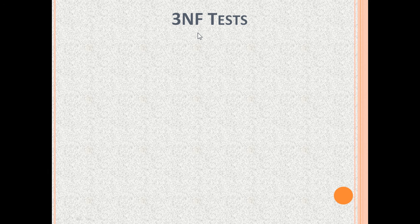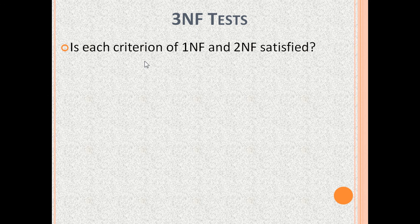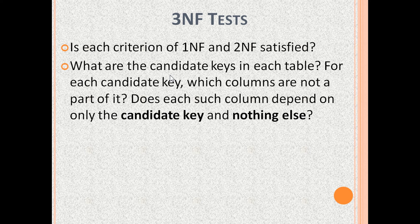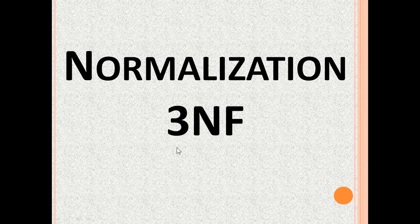We have seen database normalization explained with examples of how to test if a table is in 3NF or not. We need to check: Is each criterion of 1NF and 2NF satisfied? What are the candidate keys in each table? For each candidate key, which columns are not part of it? Does each such column depend on only the candidate key and nothing else? In this video, we saw what 3NF is, examples of tables not in 3NF, normalization techniques to convert them to 3NF, and tests to check if a table is in 3NF.